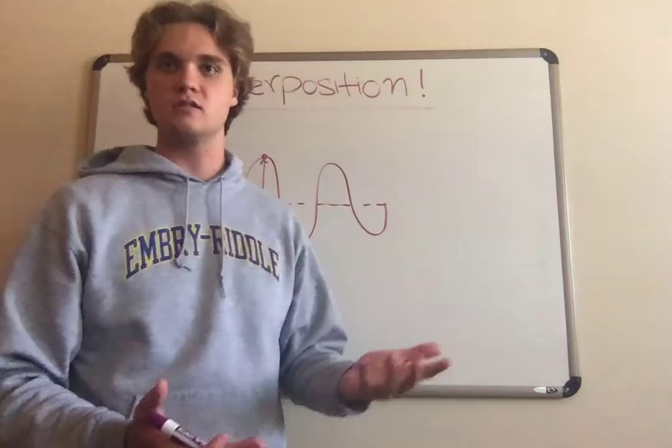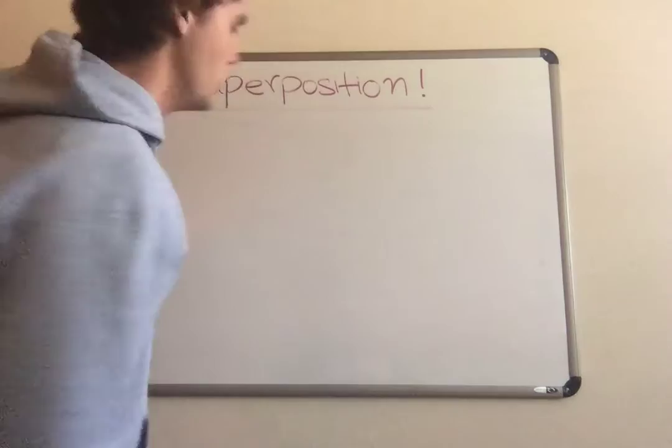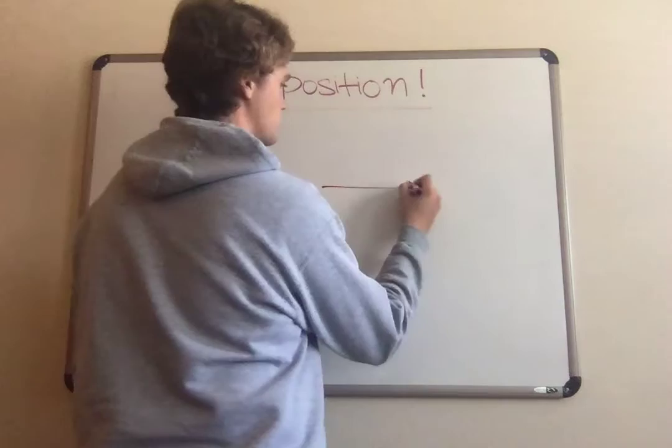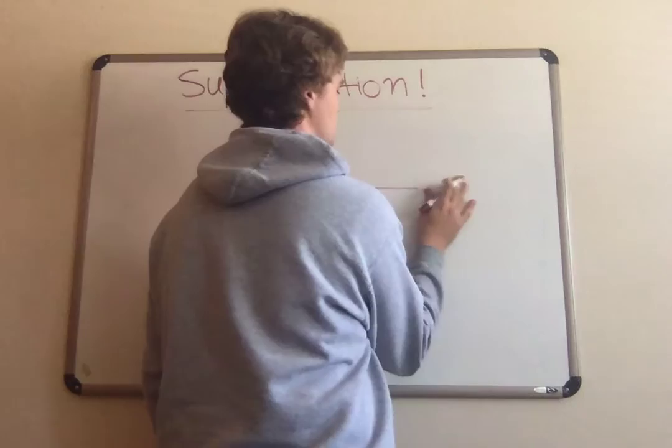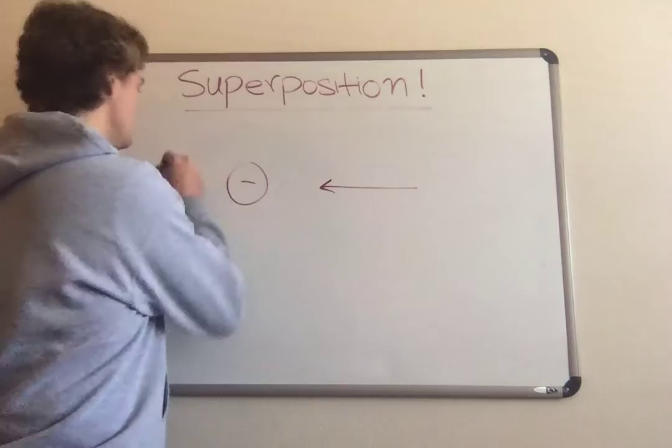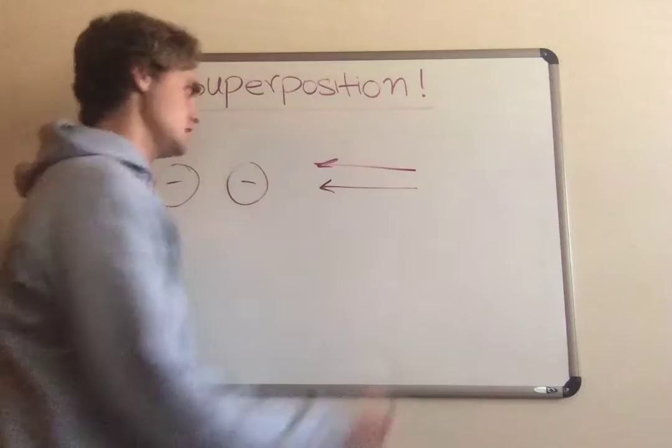Then you get into physics 3 and all of a sudden you have a point charge - you get an electron or something and you get an electric field. You get an electric field towards the negative charge, then you've got two negative charges so you get double the electric field, and it's back to just simple addition of vectors, because E-field is a vector you learn in physics 3 or E&M.